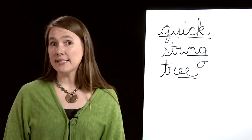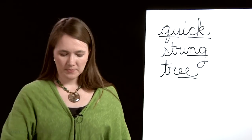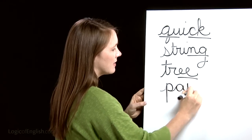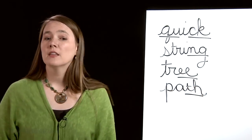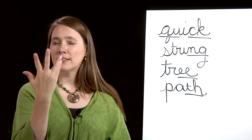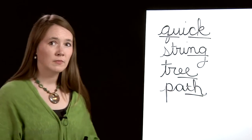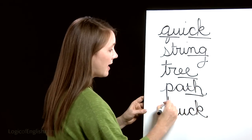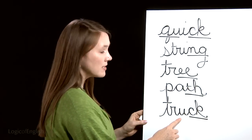The fourth word is 'path' — please stay on the path. P-ă-th. Go ahead and write it. We'll underline the 'th.' The fifth word is 'truck' — the truck is driving on the road. T-r-ŭ-ck. What kind of K? That's right, two-letter K. Go ahead and write it. We'll underline the two-letter K. Why did we use two-letter K? It's after a single short vowel.